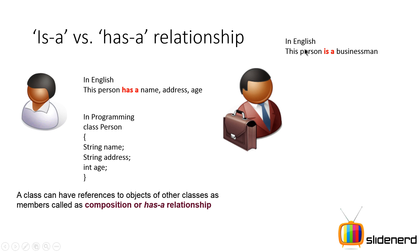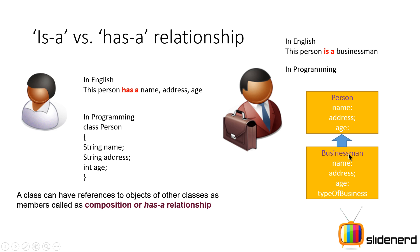On the other hand, in English when you say 'this person is a businessman,' that is what inheritance means. In programming, this translates like this: there is a class Person, there is a class Businessman which inherits name, address, and age from Person and adds its own attribute, type of business. In other words, a businessman is a specific type of person. So 'has-a' means composition and 'is-a' means inheritance.